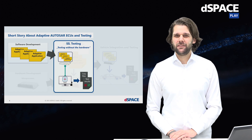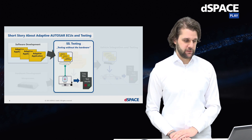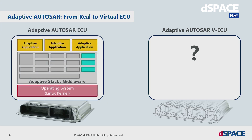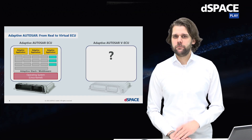So how can we create these adaptive virtual ECUs? To better understand the idea, let's place a picture of the real adaptive AUTOSAR ECU next to the virtual one. We see different layers: first, the application layer with one or multiple adaptive applications; then the adaptive stack, also referred to as the middleware; and then a POSIX-based operating system, typically a Linux kernel.